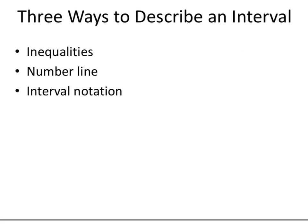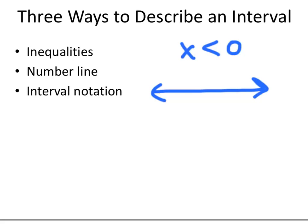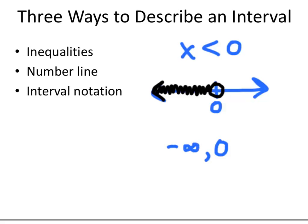What if our inequality goes in the other direction? For the numbers x that are less than 0 — the set of negative numbers — on the number line we draw an open circle at 0 and shade to the left, down forever. Instead of going to positive infinity, 0 is now at the upper end of our interval, and the other end is negative infinity. Since we don't want to include 0, we write round brackets: (−∞, 0). Negative infinity is not a number, so we never use square brackets there.